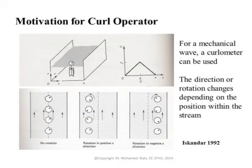Here we apply the right-hand rule. Because of the velocity profile, there is a curl, and the curl is normal to the plane of the page. If you apply the right-hand rule — if a right-hand screw rotates counterclockwise, it progresses out of the page — so the curl here is in the positive x-direction, coming out of the page.